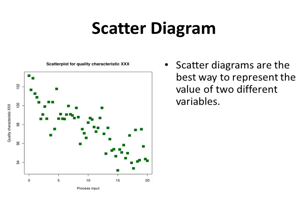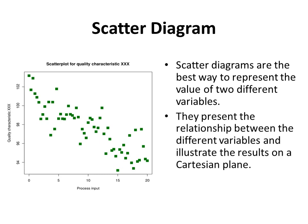Scatter diagrams. Scatter diagrams are the best way to represent the value of two different variables. They present the relationship between the different variables and illustrate the results on a Cartesian plane. Then, further analysis can be done on the values.